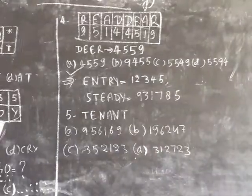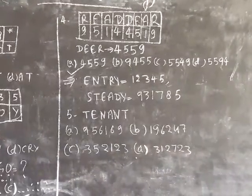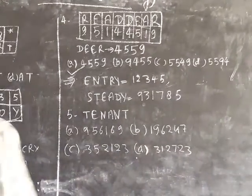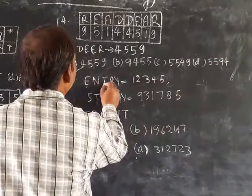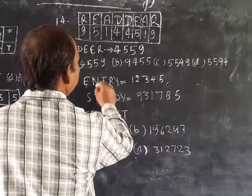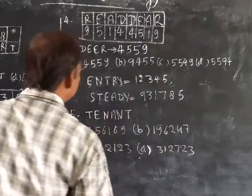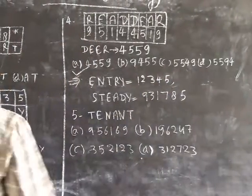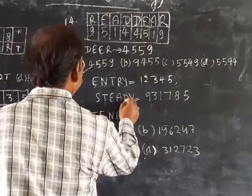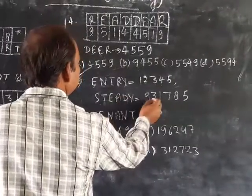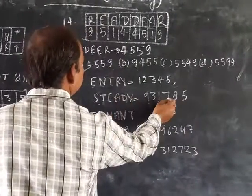Question number 5: if in a certain language ENTRY is coded as 12345, where E means 1, N means 2, T means 3, R means 4, Y means 5, and STEADY: S means 9, T means 3, E means 1, A means 7, D means 8.